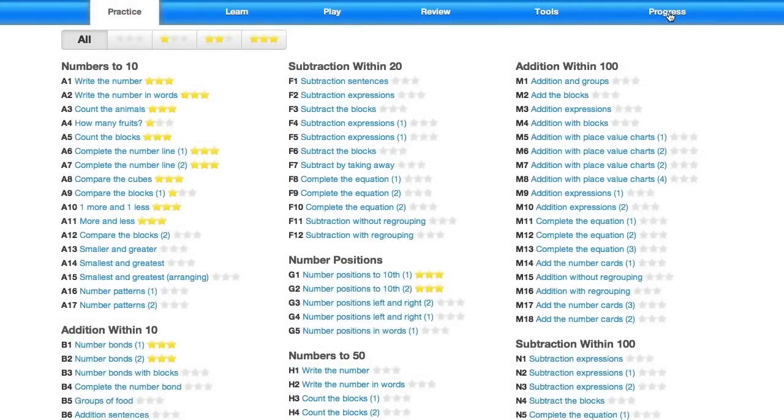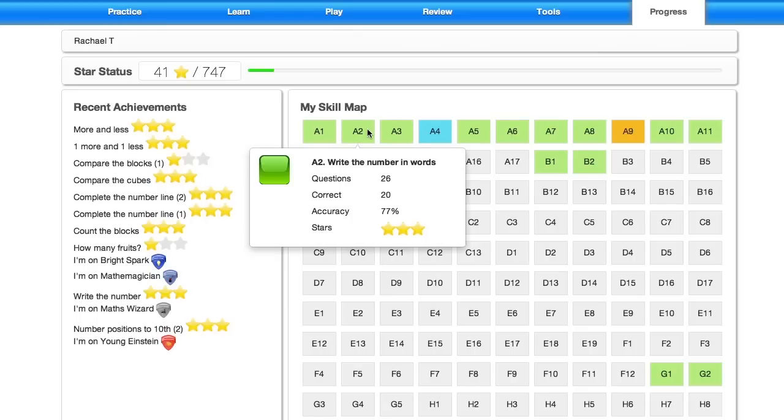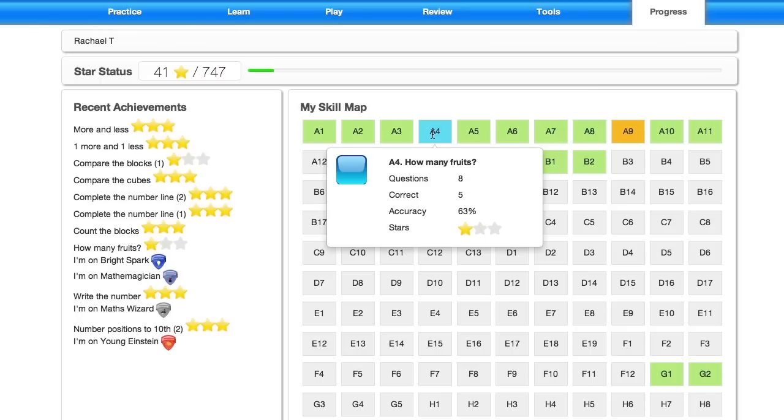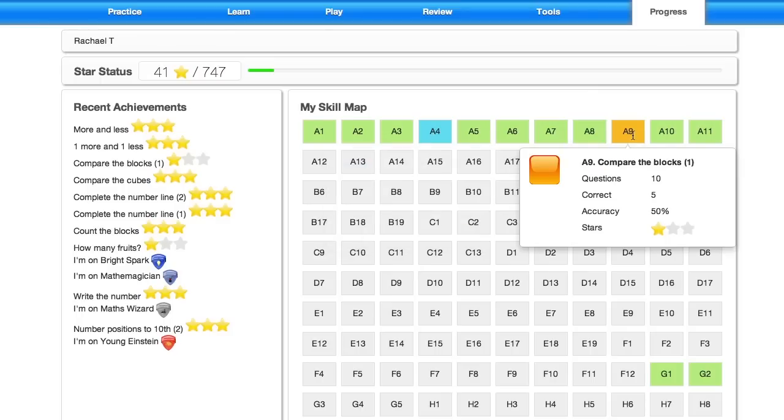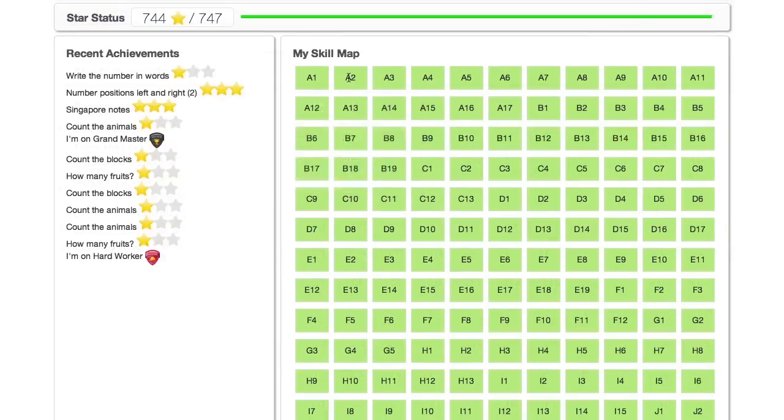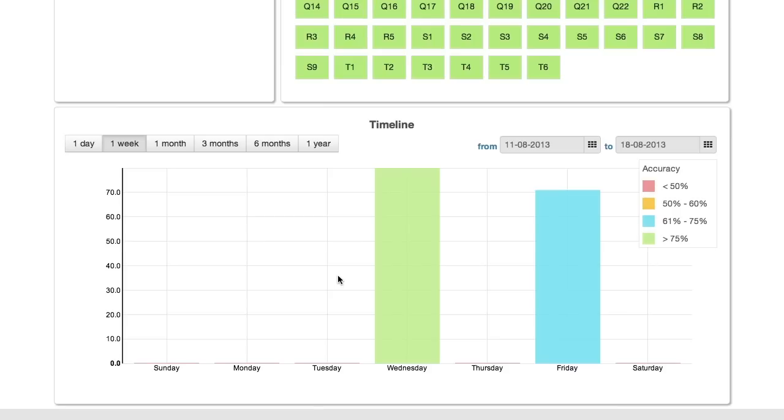Matholia includes a fully integrated tracking and reporting system that allows parents and teachers to monitor individual, group or class performance. Key features include full statistical analysis across all modules.